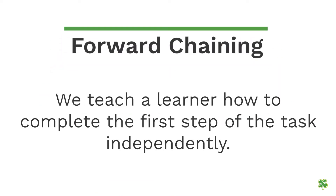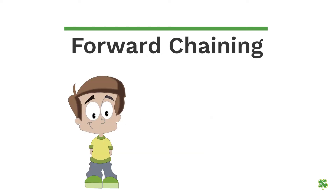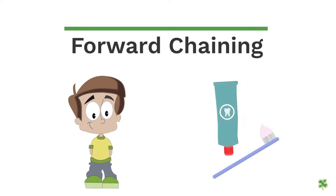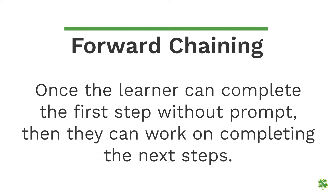In forward chaining, we teach a learner how to complete the first step of the task independently. For example, when teaching a learner how to brush their teeth, we will teach the first step — which is to pick up the brush and toothpaste — and the rest of the steps will be prompted. Once the learner can complete the first step without a prompt, then they can work on completing the next steps.